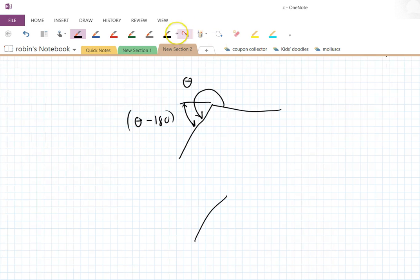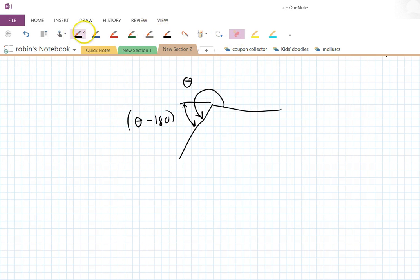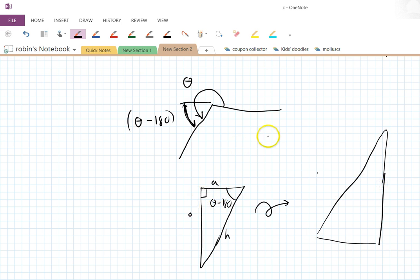Okay, so if I construct a little triangle on that, let's try that again. I'll just try that again. If I just construct a little triangle on that angle, there's my right angle. This angle here is theta minus 180. There's my adjacent, there's my opposite, there's my hypotenuse.